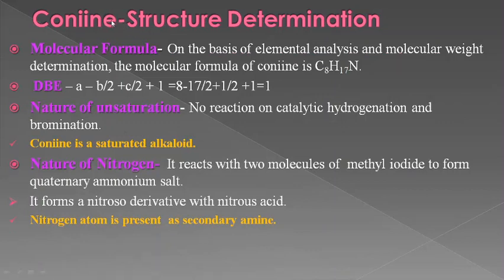Next we come to the structure elucidation of conine, which is based on chemical analysis. The first step is the determination of molecular formula, done on the basis of elemental analysis and molecular weight determination. The molecular formula is C₈H₁₇N. Next we come to the double bond equivalence, which gives the nature of unsaturation.